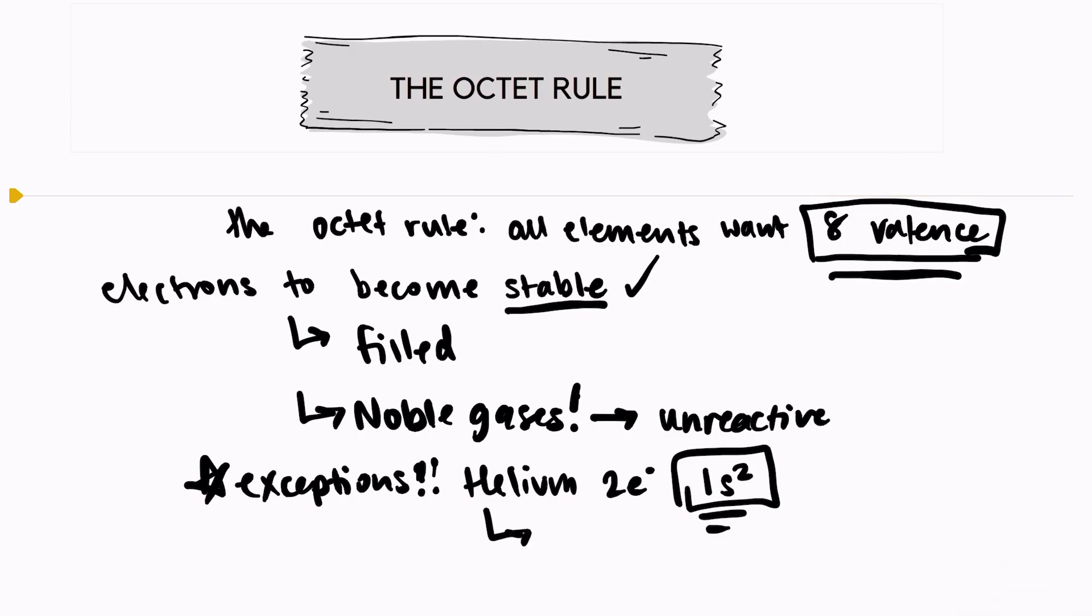There's a few elements on the periodic table that will also become stable by having two valence electrons. And those are hydrogen, lithium, beryllium, and boron.